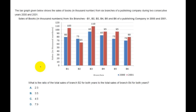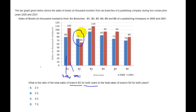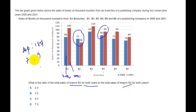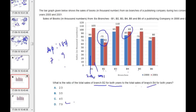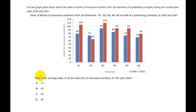What is the ratio of the total sales of branch B2 for both years to the total sales of branch B4? B2: 75 plus 65 equals 140. B4: 85 plus 95 equals 180. Ratio of 140 to 180 — cancel the zeros — gives 7 to 9. The answer is 7 is to 9.